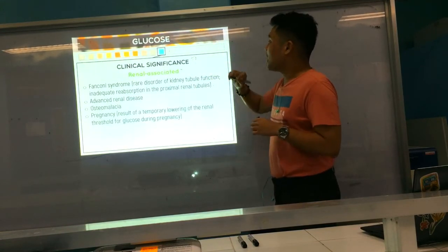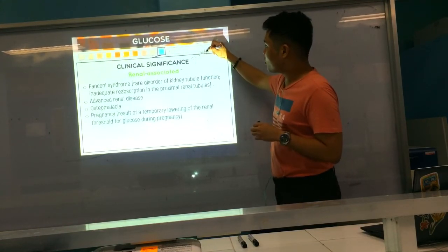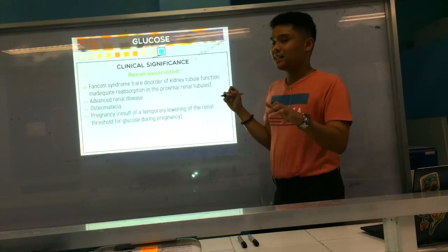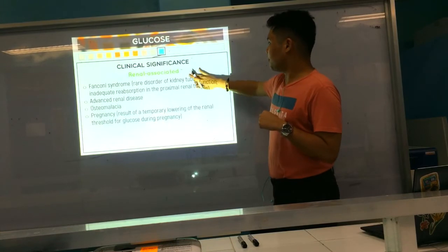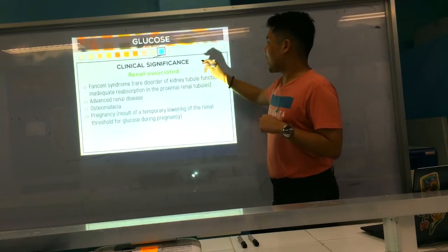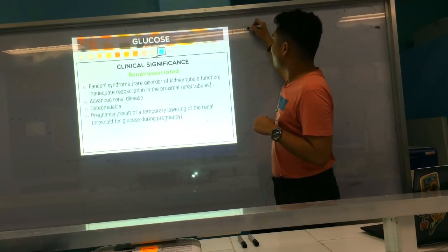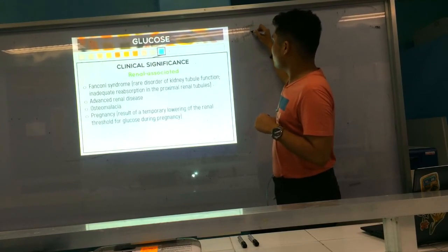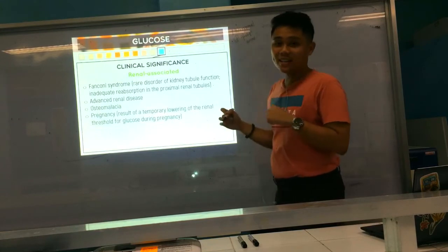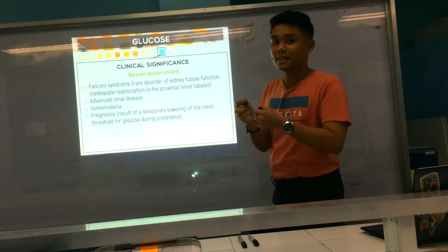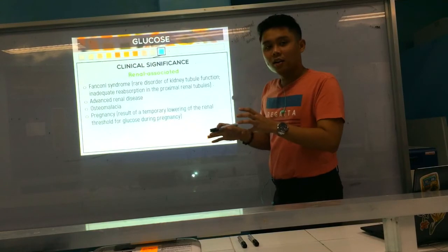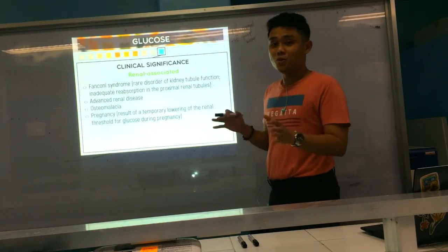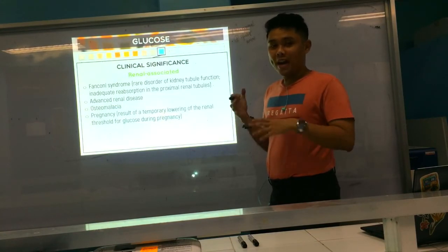I want to emphasize: for renal-associated glycosuria, the FBS is usually normal, because the patient doesn't typically have diabetes — the problem is with the kidneys. So if a case study shows normal FBS but glucose is positive in urine, you cannot say it is hyperglycemia-associated. You would consider a kidney tubule problem causing the glucose to spill into the urine.